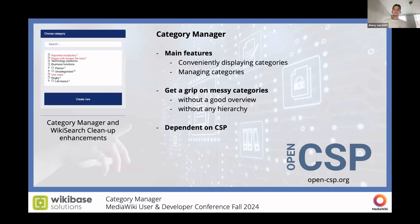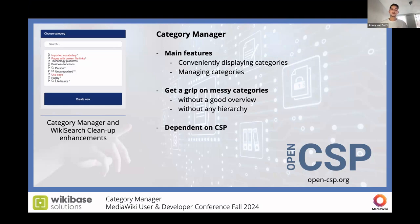Let's start with the Category Manager. It has two main features. You can conveniently display categories — as you can see in the top left corner — in a folder-like or tree-like structure, where if you have subcategories, it creates a folder that you can unfold to unveil all the subcategories. You can also search and select categories. You can also use the Category Manager to manage your categories: creating, renaming, moving, or deleting them. This is very useful to get a grip on all the messy categories you have on a large wiki. You can create a good overview and hierarchy, saving time for yourself and your fellow wiki users.